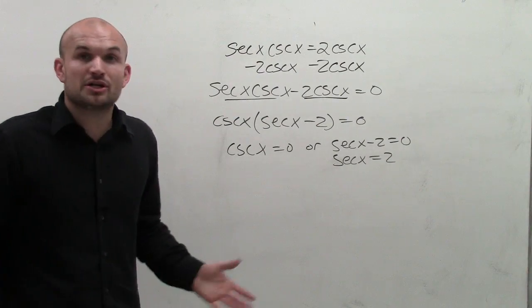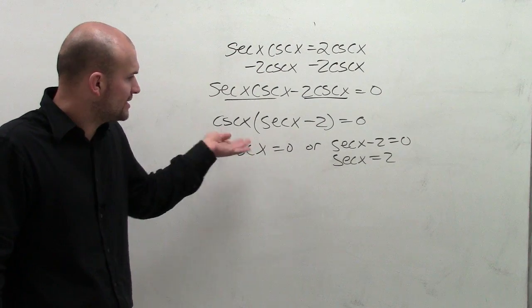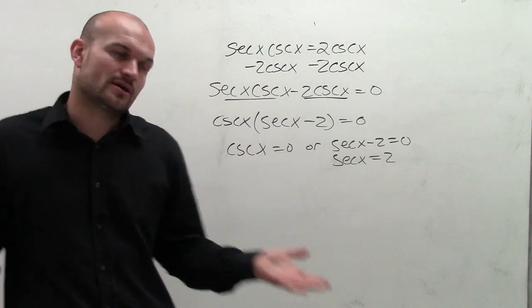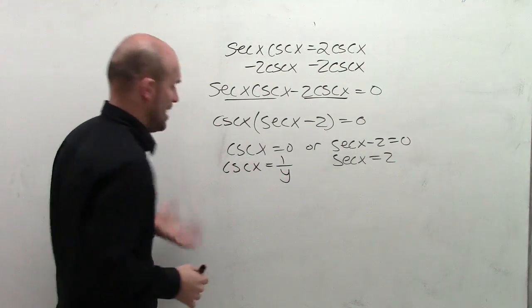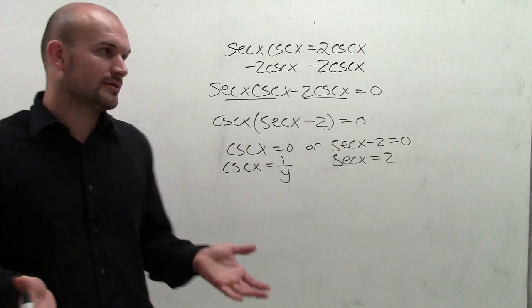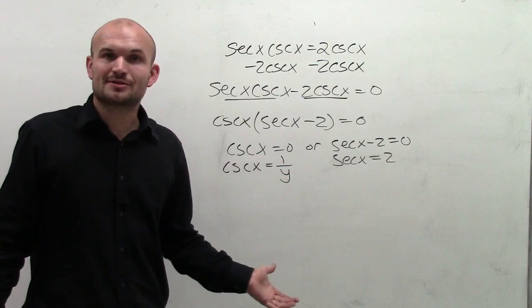So now we need to apply both these solutions. We look at this and say, when does cosecant of x equal 0? Now remember, the cosecant of any angle is equal to 1 over your y-coordinate. Well, if y was 0, then we'd have an undefined solution.